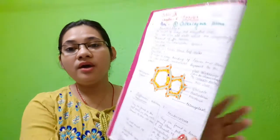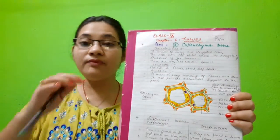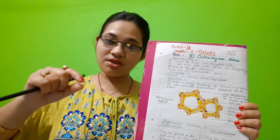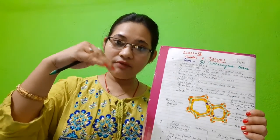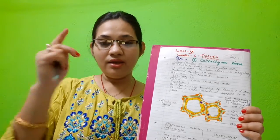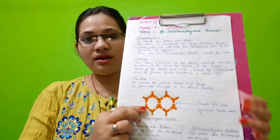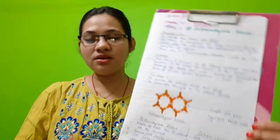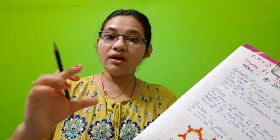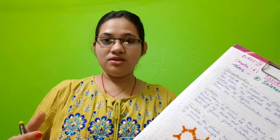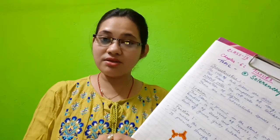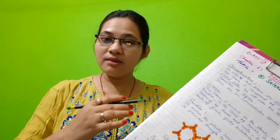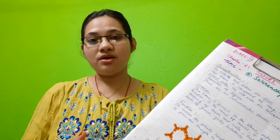Collenchyma tissue helps in maintaining the flexibility of the stem — it helps in easy bending. Suppose there is wind and the branch or twig will bend but not break — that is because of collenchyma tissue. But in the case of sclerenchyma, it is present in the wood — the hard wood of trees has lignified walls. These are the basic differences between collenchyma and sclerenchyma.